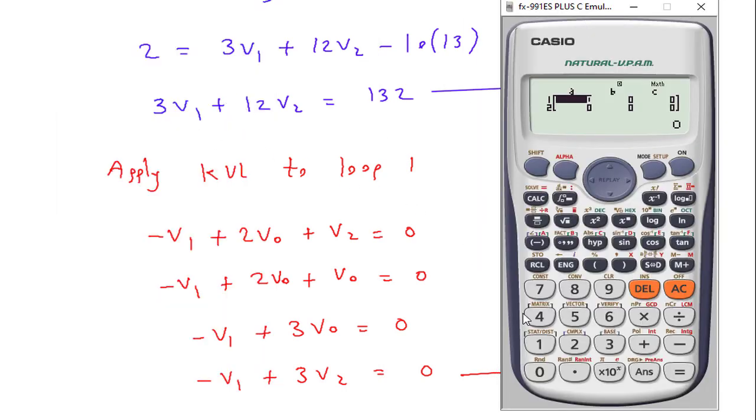So this will be 3, 12, 132. This will be minus 1, 3, 0.